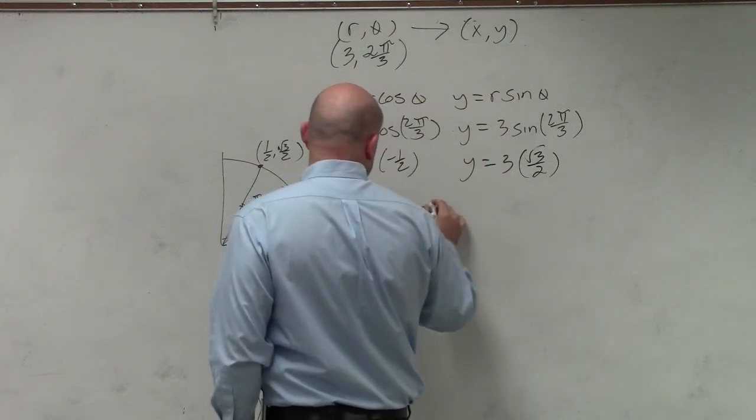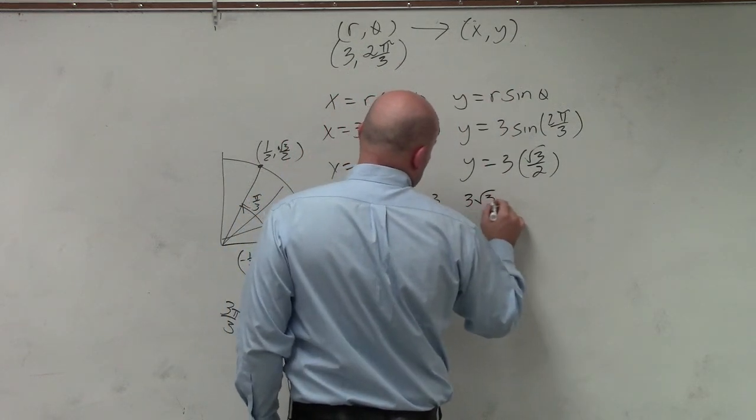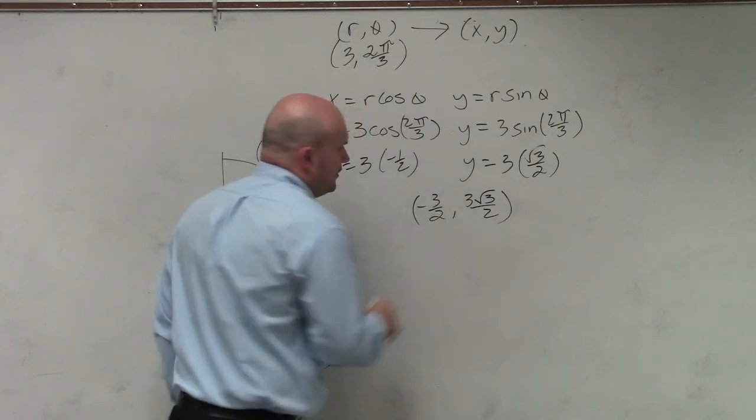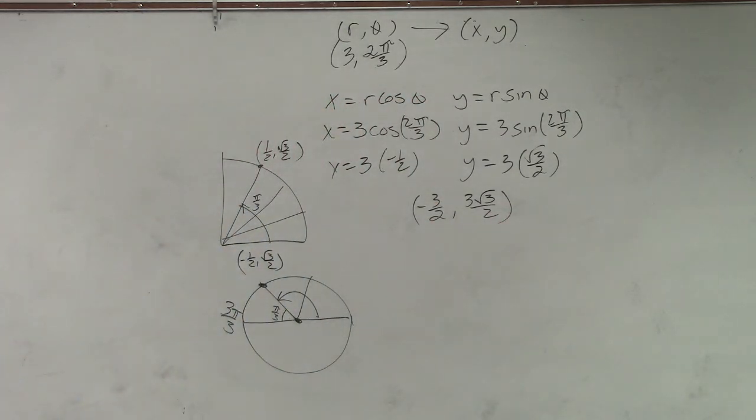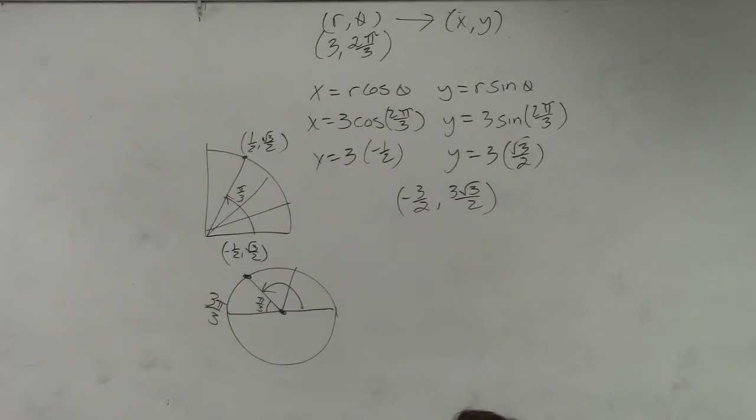So your coordinate point is negative 3 half comma 3 square root of 3 over 2. So no decimals. See how easy and nice that was? No decimals. Now, again, if you want to plug them in your calculator and make sure that's the same values, then do that, right? I mean, that makes sense.